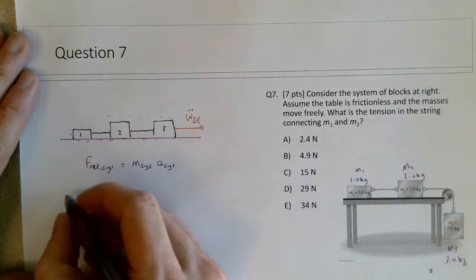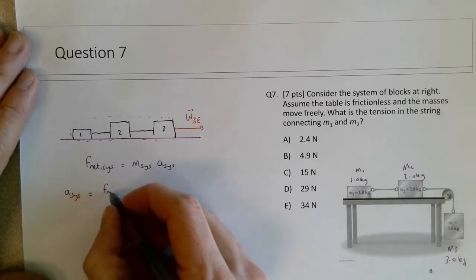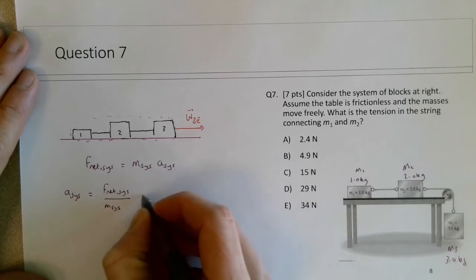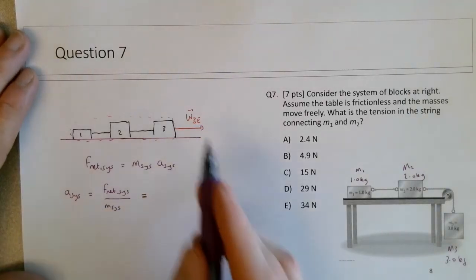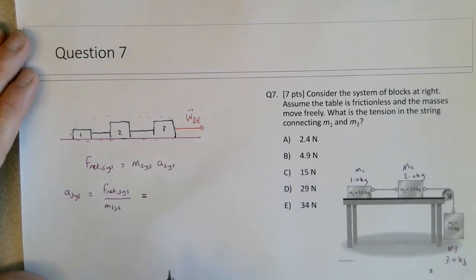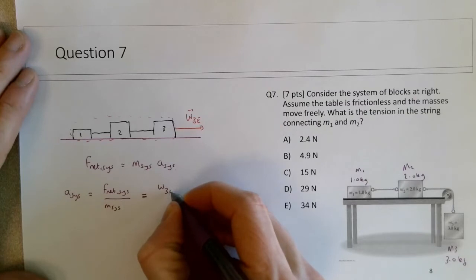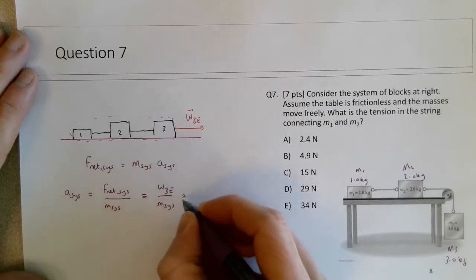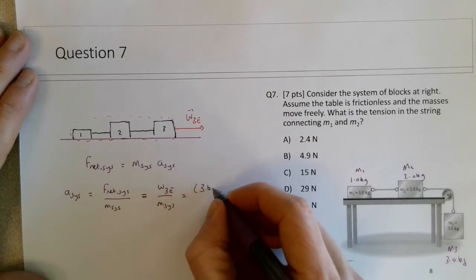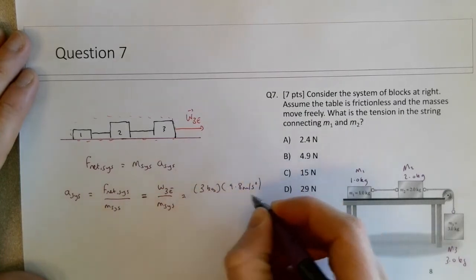So really my goal here is to figure out what is the acceleration of the system of the three blocks. I'm going to solve here for the A of the system. It's going to be the F net of the system over the mass of the system. As I mentioned, the only thing that's driving the whole system is that weight force on block 3.